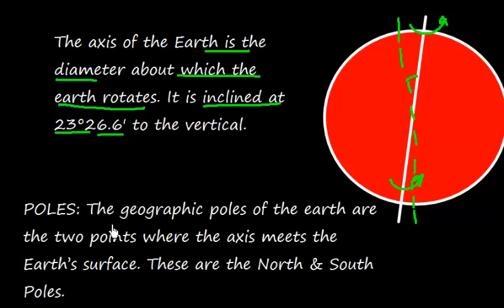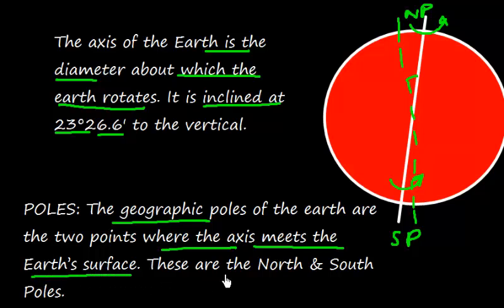It is making some angle with the vertical. Now, let us define poles. The geographical poles of the Earth are two points where the axis meets the Earth's surface. Here we have North Pole and here we have South Pole. Basically, these are the points where the axis meets the Earth's surface and these are North and South Poles.